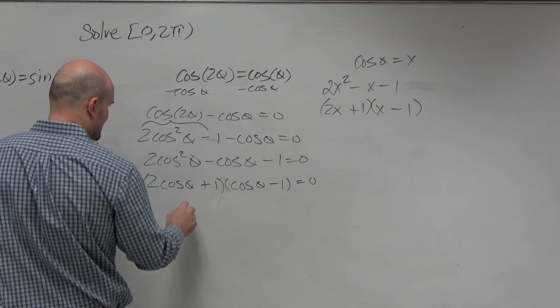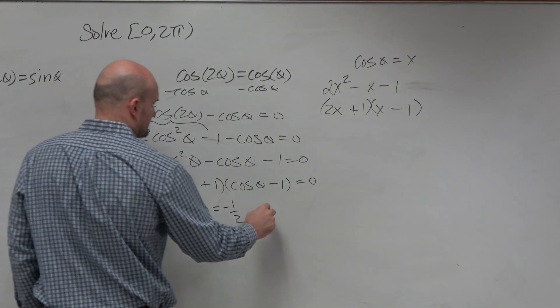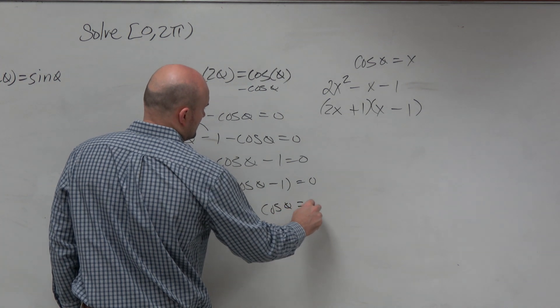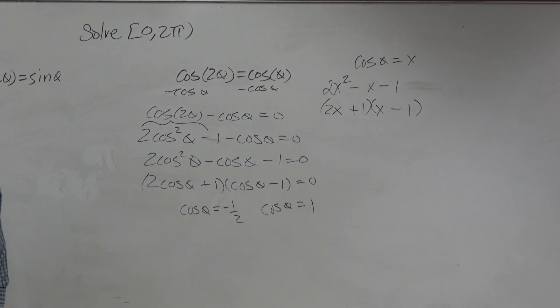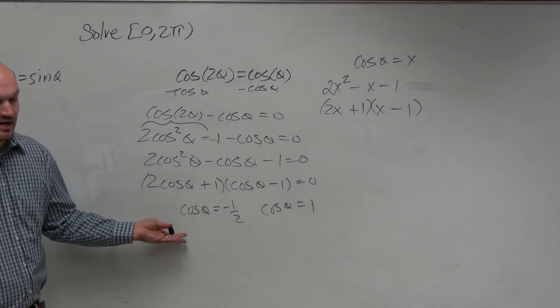So therefore, I can set each one of these equal to 0 and then isolate the cosine of theta. And then now, we just need to solve. And this is much easier. We're used to this, right?